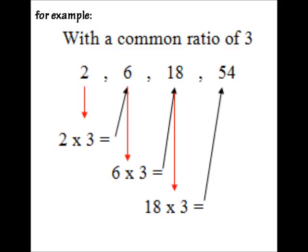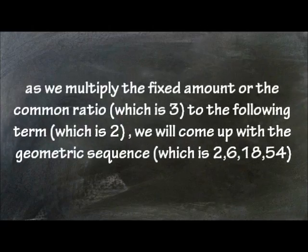For example, with a common ratio of 3, we have to multiply 2 by 3 to get 6, 6 by 3 to get 18, 18 by 3 to get 54. As we multiply the fixed amount or the common ratio to the following term, we will come up with a geometric sequence.